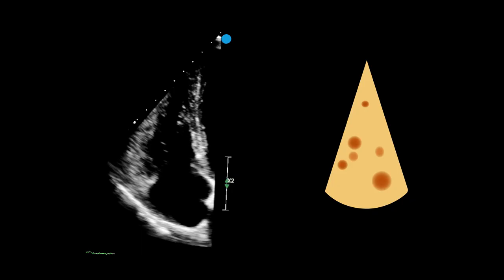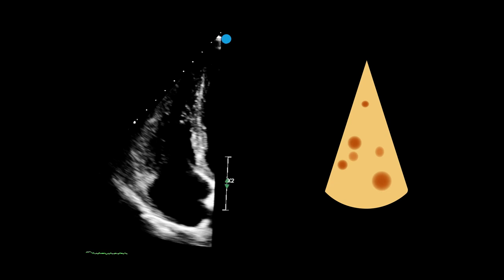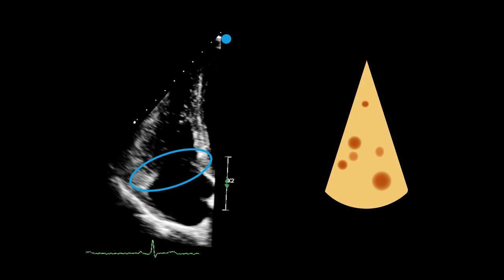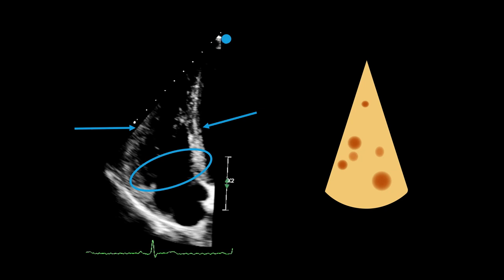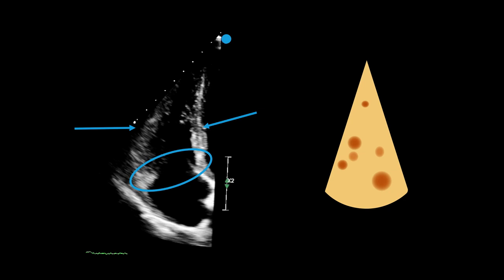Up until this point, we have discussed the normal right heart. In review, the size and shape of the right ventricle should be triangular, like a wedge of cheese, as seen here. The tricuspid annulus, where the tricuspid valve sits securely, should move up towards the apex during systole and move back down during diastole. The free wall of the ventricle should contract towards the interventricular septum during systole, making the chamber of the right ventricle smallest at the end of systole, and then move away from the septum during diastole, making the chamber largest at the end of diastole.